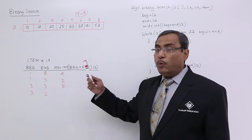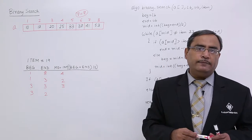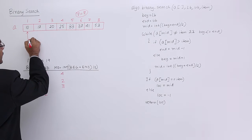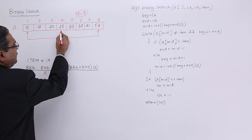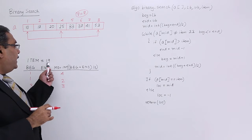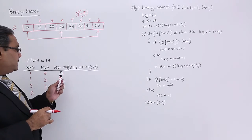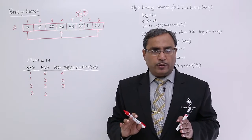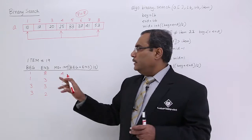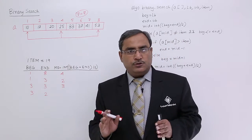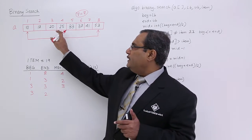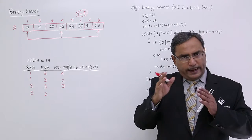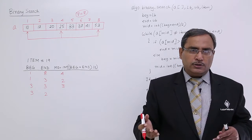Then I shall search this item. The searching item I have considered is 19. So, this is my beg, this is my end, and this is my mid. I shall search 19 at this particular place where mid equals 4. Now, 25 is not equal to 19, and also 25 is greater than 19. So, the item is lesser than 25, meaning there is a probability that this item will be found in the first half, not the second half, because in the second half the data greater than 25 will be there and I cannot find 19 there.